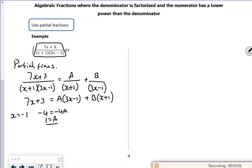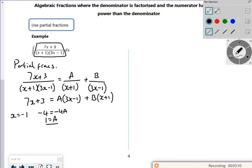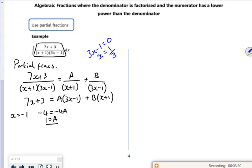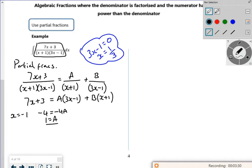So for me, for this one, for the 3x minus 1, if you're not sure, let me change colour. If you're not sure what to use for this, then think 3x minus 1 is equal to 0. You want to make that bracket equal to 0. So I'll take the 1 over 1 and divide 3. So that tells me I'd want to use x as a third. So if you're not sure, just somewhere, put it equal to 0 and work it out.